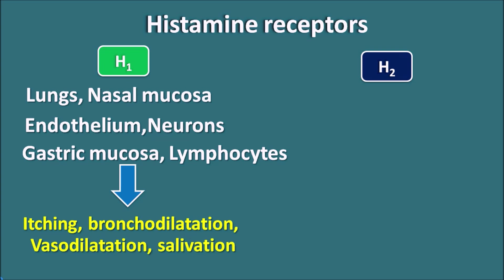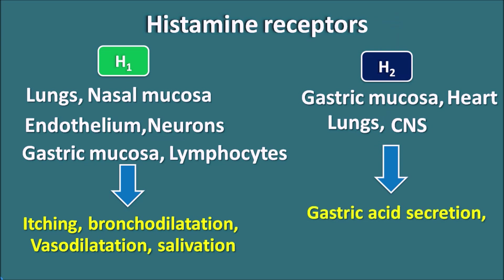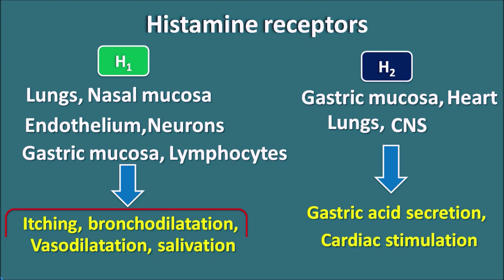Histamine can also act through H2 receptors, which are present at the gastric mucosa, heart, lungs, and CNS. When these receptors are activated, they increase gastric acid secretion by acting on gastric parietal cells, and they can also produce cardiac stimulation. But the allergic response here is mediated by H1 receptors.